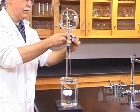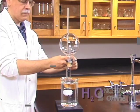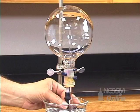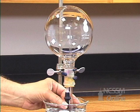We're going to lower the tube connected to the round bottom flask into a large beaker of water. We're going to inject the water from the dropper into the flask.